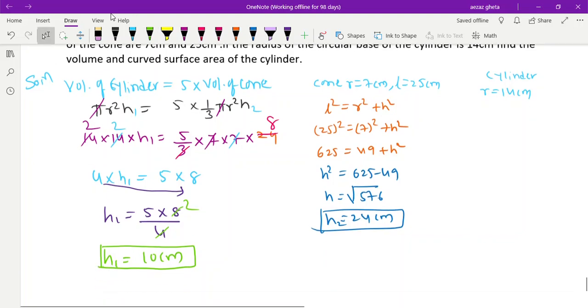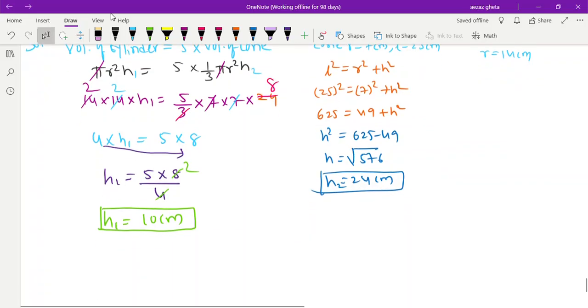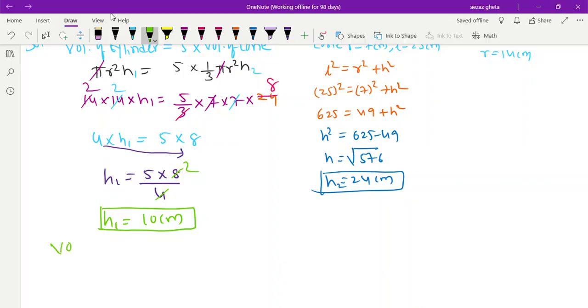Now we'll find volume of cylinder and CSA. Volume of cylinder = πr²h = 22/7 × radius 14², and height 10. So 22 × 14 × 2 × 10.